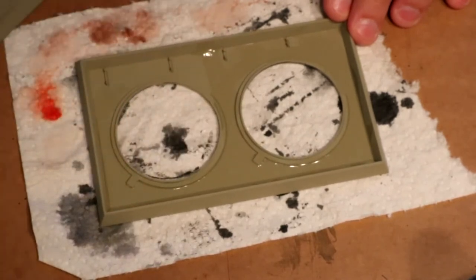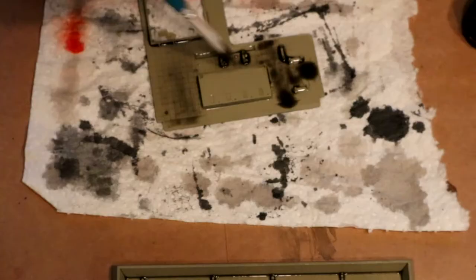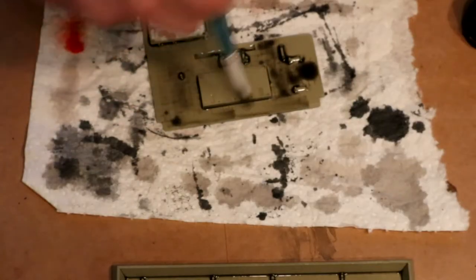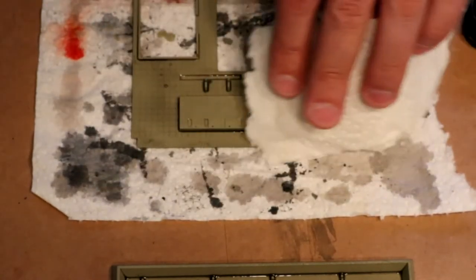I always start with a liberal coating of water before applying the Vallejo Black Wash. I'll use a paper towel to soak up any excess puddles and then leave it to air dry.